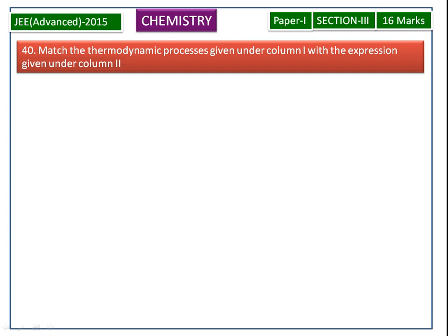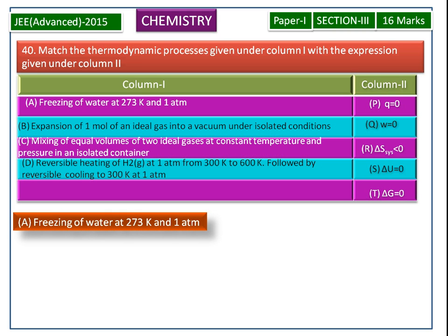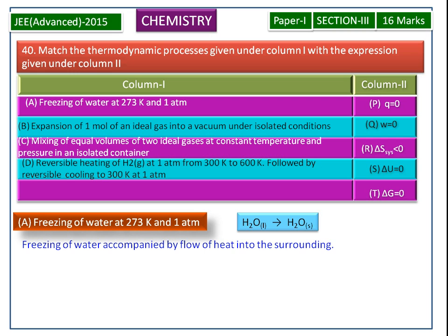Match the thermodynamic processes given under column 1 with the expressions given under column 2. First we see the A process. The A process is freezing of water at 273 Kelvin and 1 atmospheric pressure. Freezing of water is accompanied by flow of heat into the surrounding.